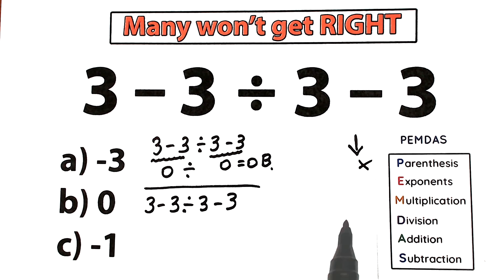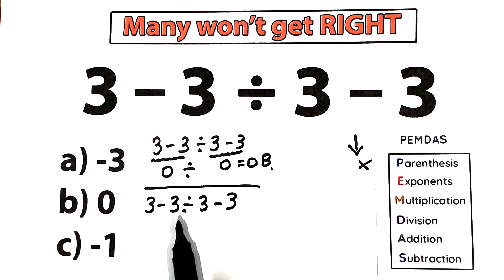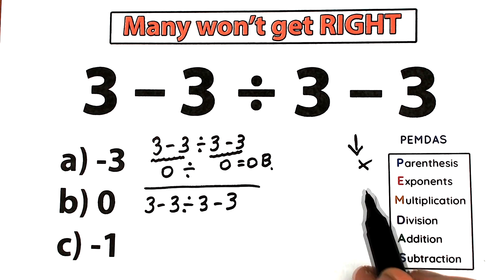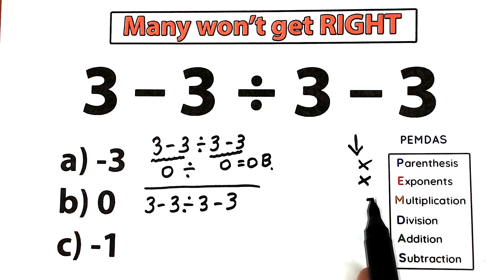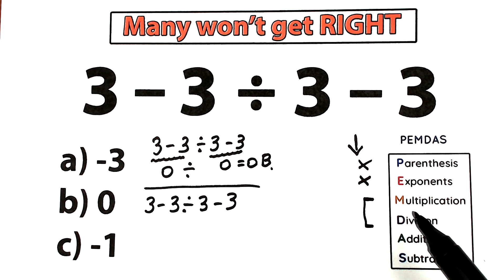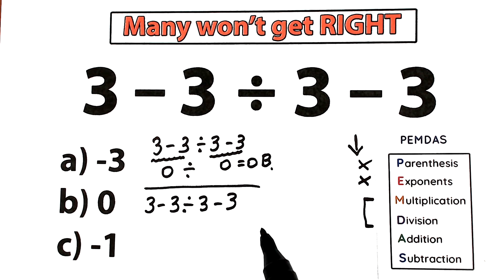The next step is exponents — squares, cubes. Personally I don't see any exponents; we have a regular expression without any exponents, so we skip this part too. The next step is the multiplication and division group. A lot of students make this mistake — they say multiplication means we should multiply first, but this is one common group: multiplication and division. We need to find the multiplication and division signs.